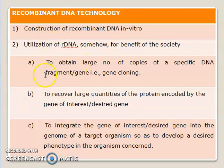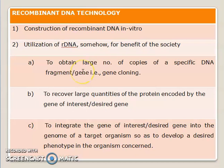The second way of utilizing the RDNA is: once you obtain a large number of copies of a specific gene, what you can do is recover large quantities of the protein encoded by the gene which has been cloned. That gene which has been cloned is basically known as the gene of interest or the desired gene. So you can first multiply a gene, increase the number of copies of a particular gene by gene cloning, and then enhance the quantity of the protein which is encoded by the concerned gene.